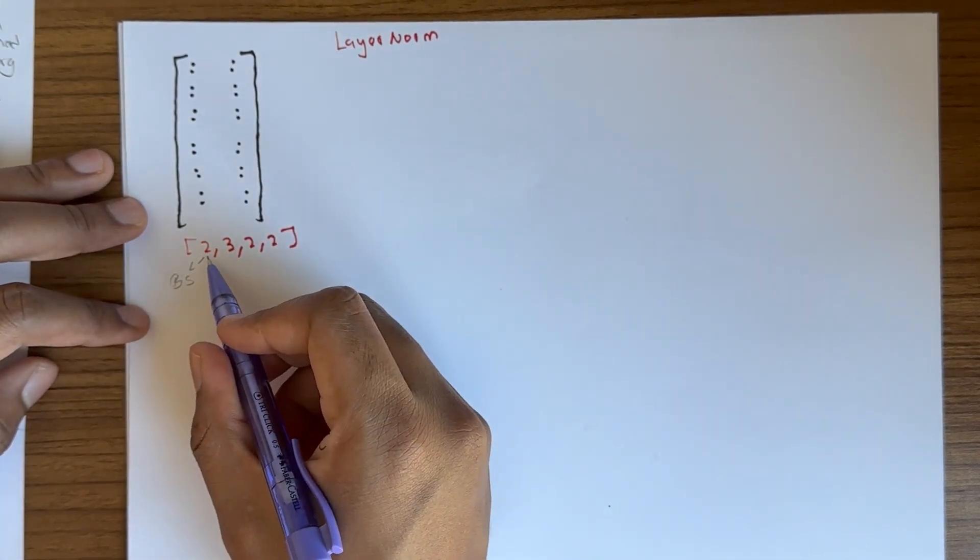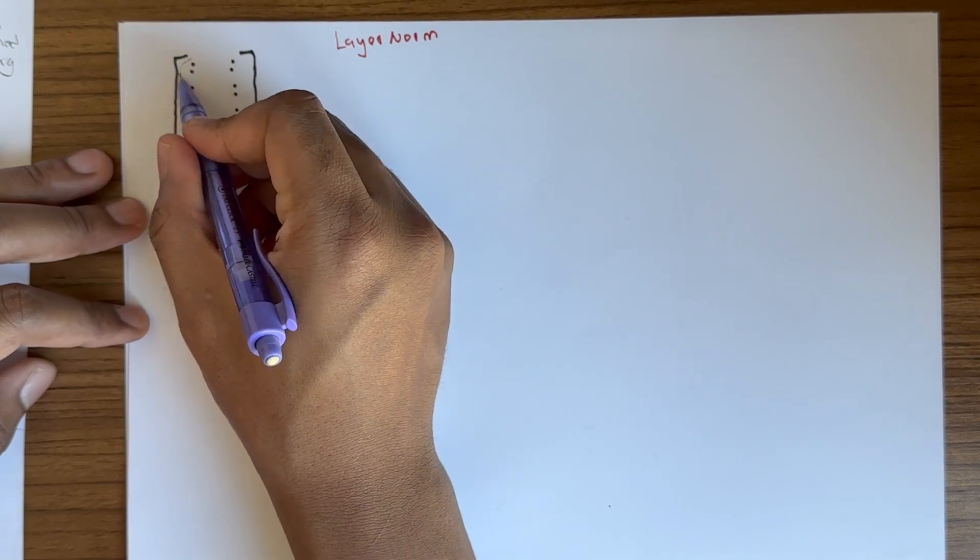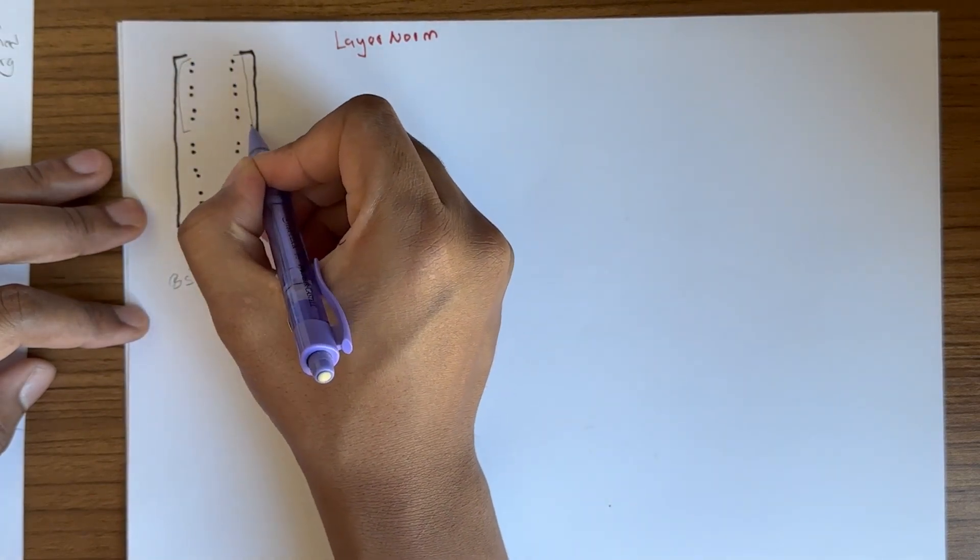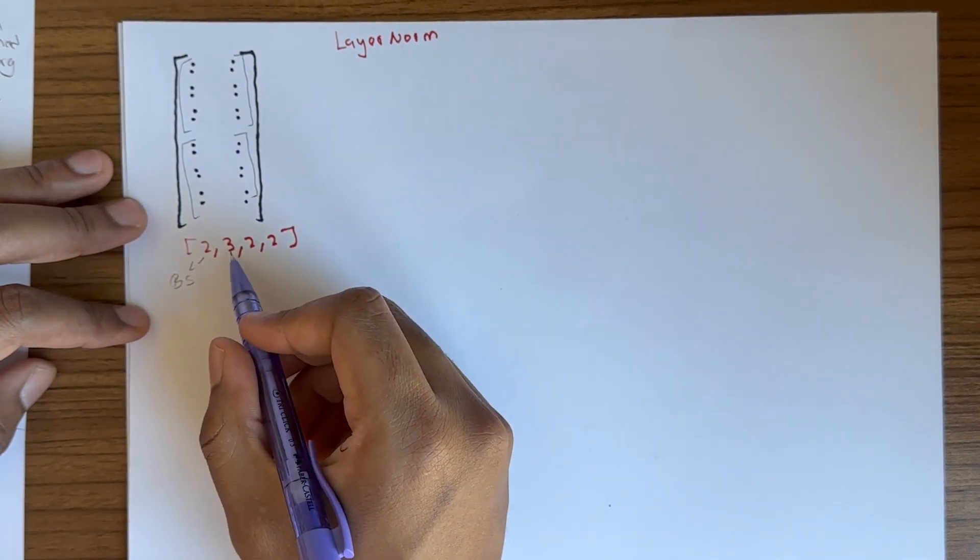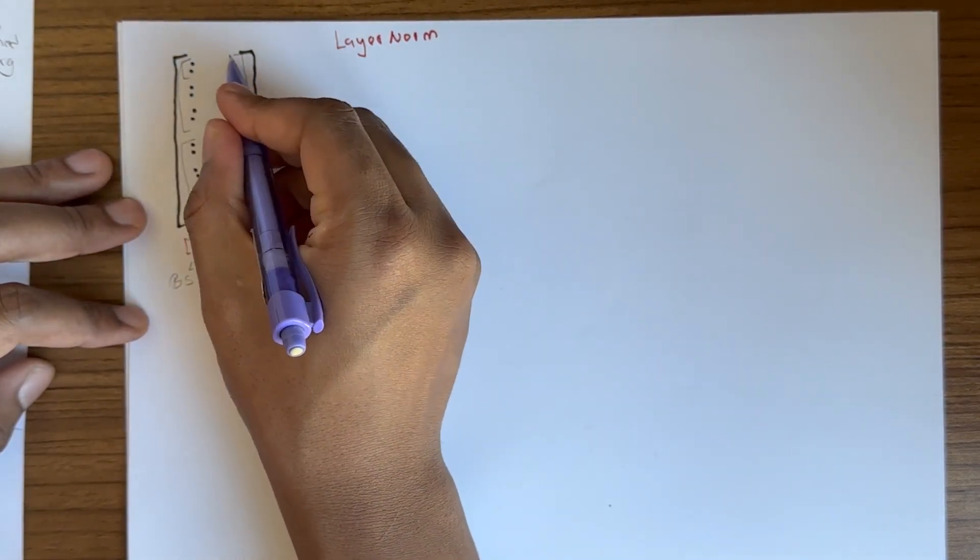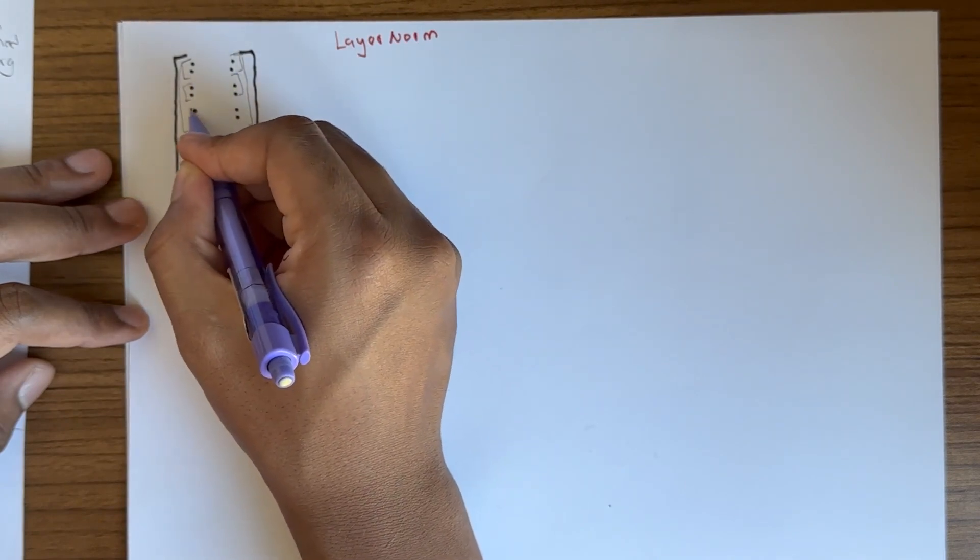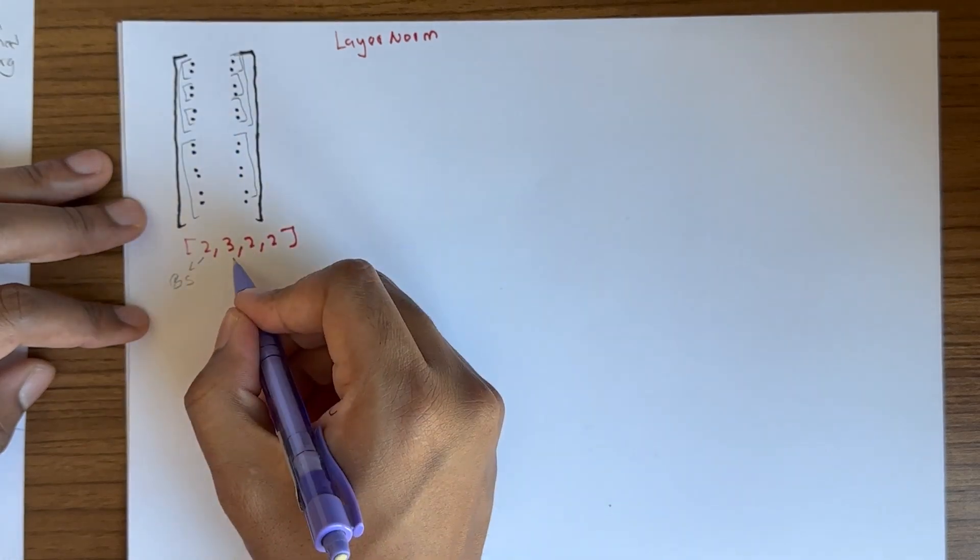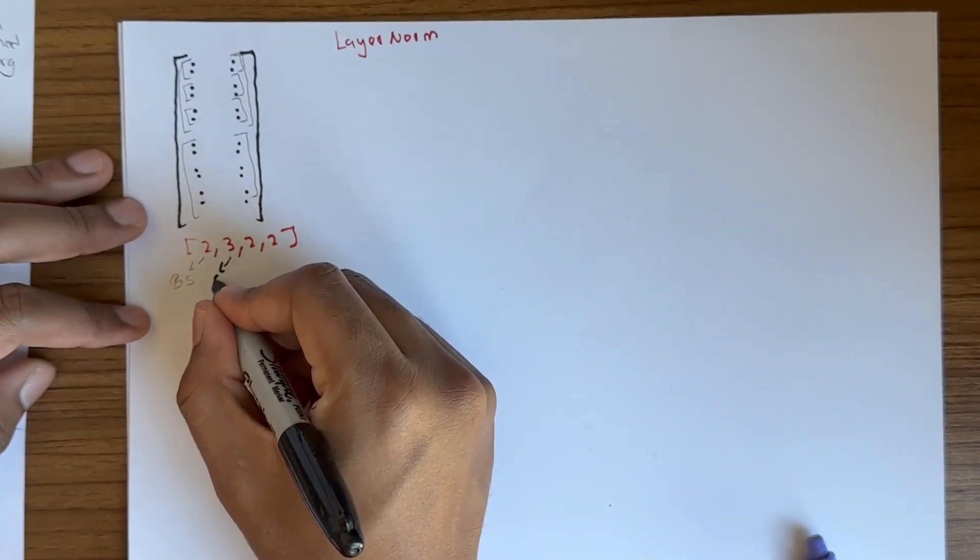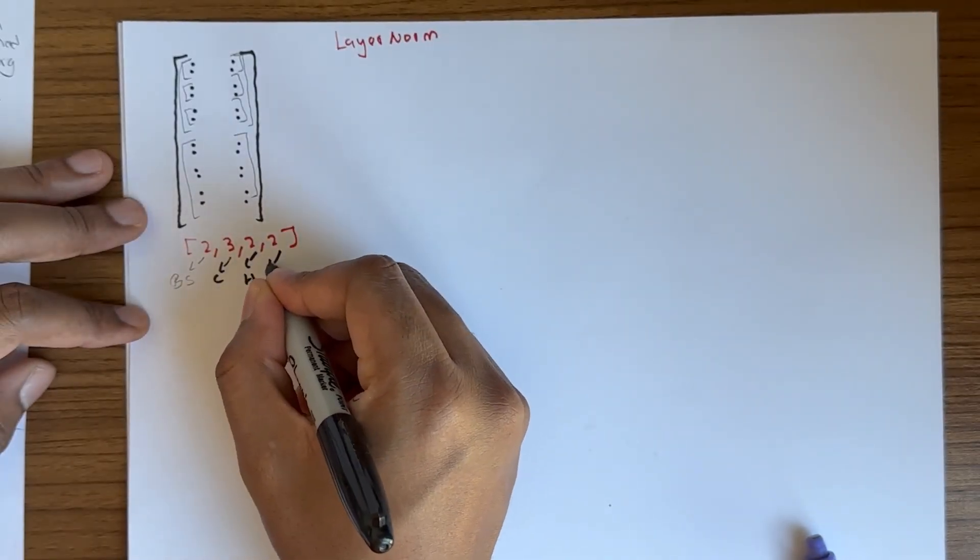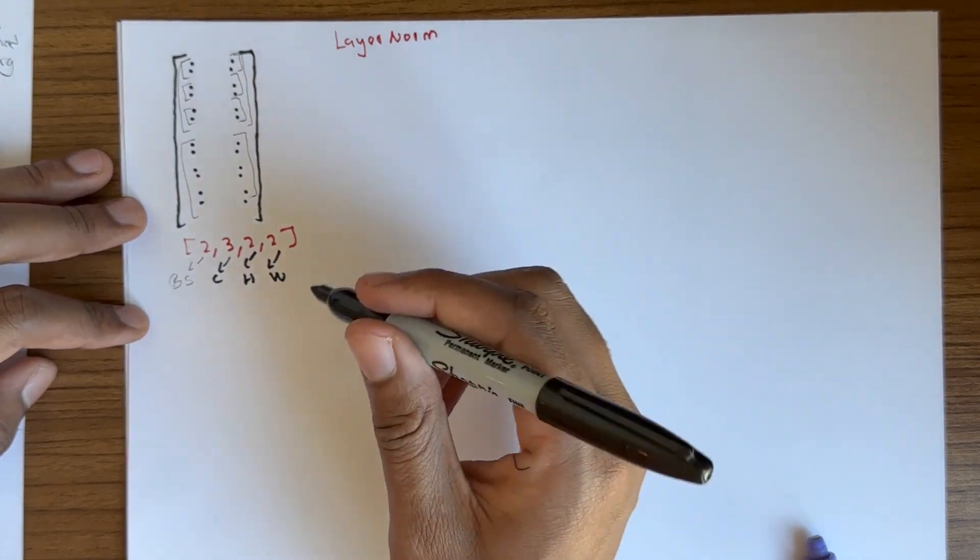Batch size here means we have 2 images. Each image has 3 channels, and each channel is 2 by 2. So this is essentially channel, height, and width.